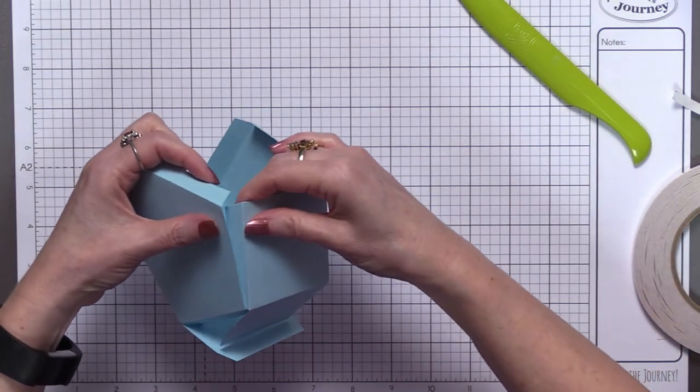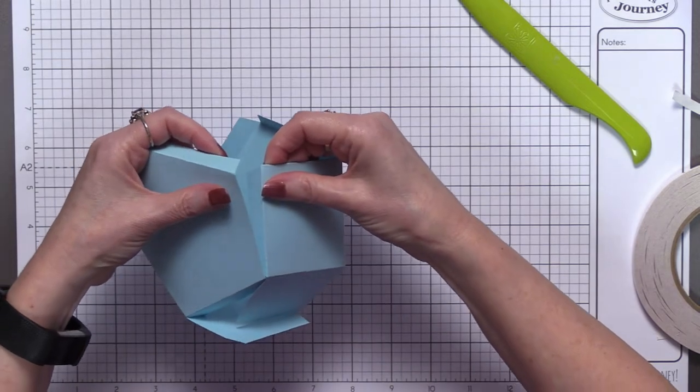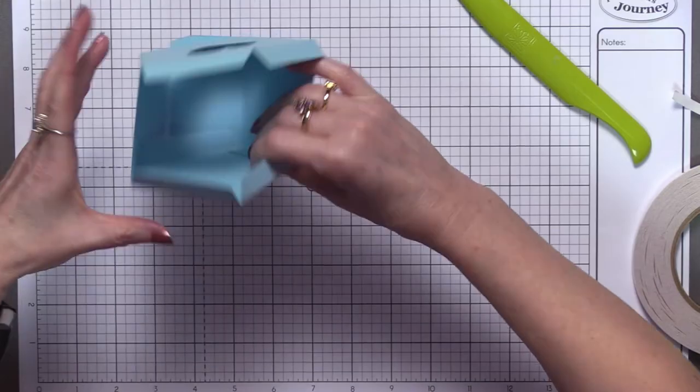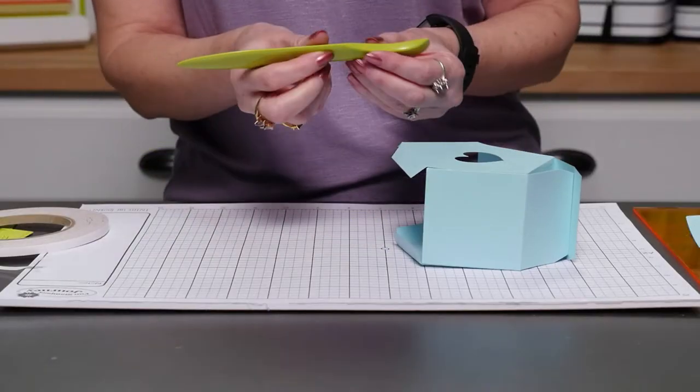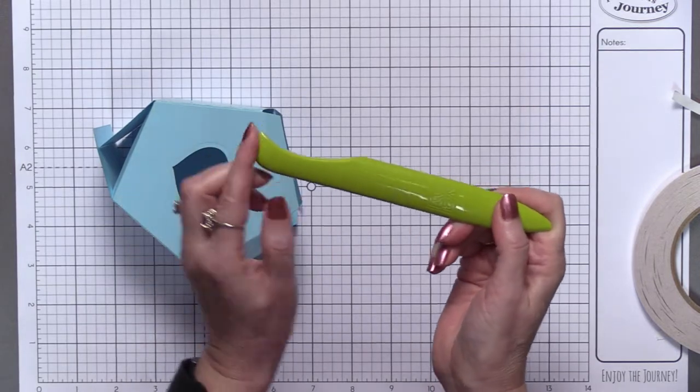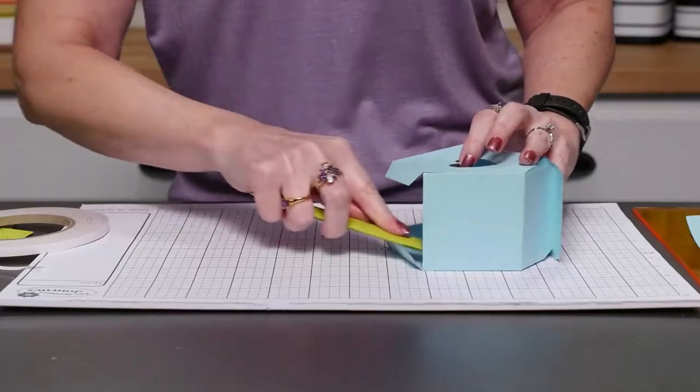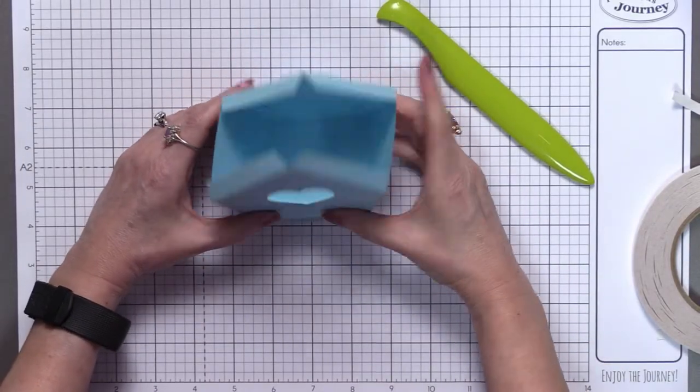For this one, you just kind of have to float it in the air and just sort of get that bottom corner lined up first, and then the top will just sort of fall. Just do a light pinch, turn it on its side, and use our crease tool. It has a thicker curved end, and that is perfect for going in here when you're reaching inside things.